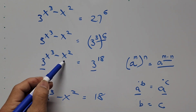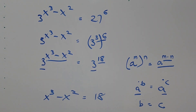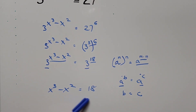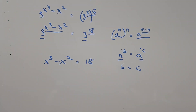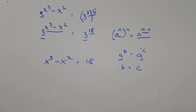So equating the exponents gives us x cubed minus x squared equals 18. This is now a cubic equation, so we'll have three roots of x. One way to find the first root is by trial and error — just plug in values like positive or negative 1, 2, 3, and so on.